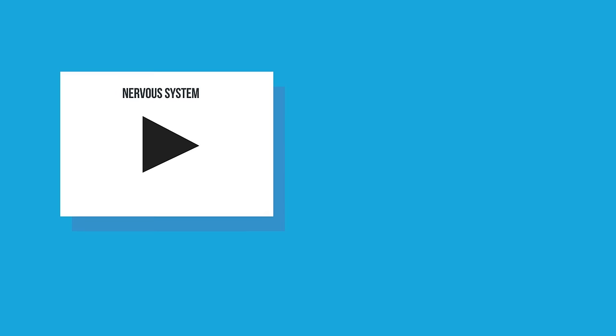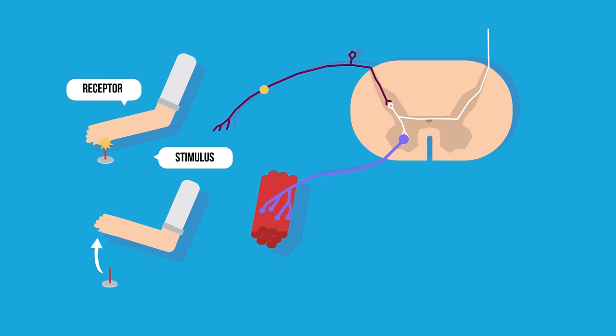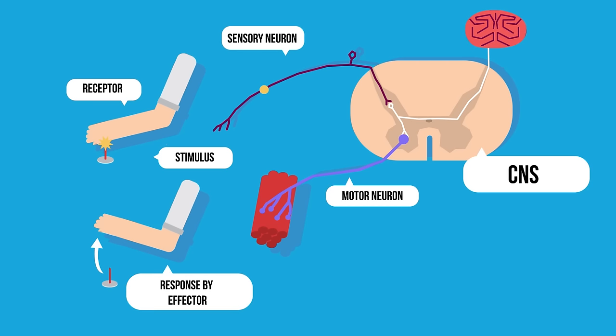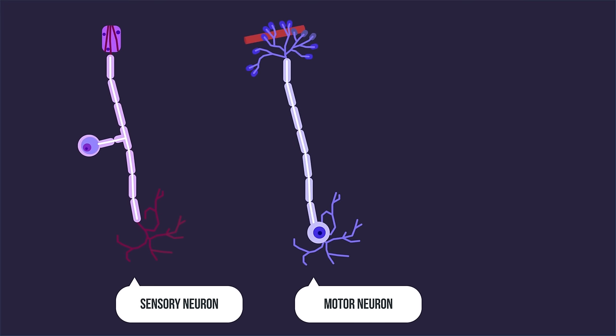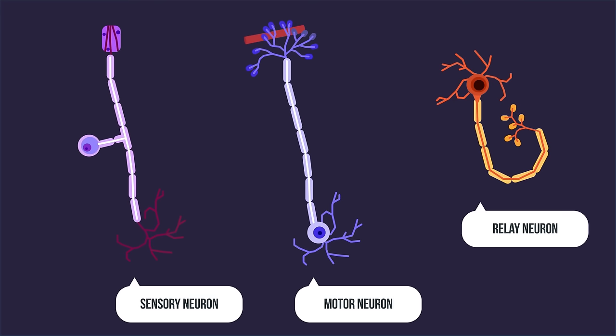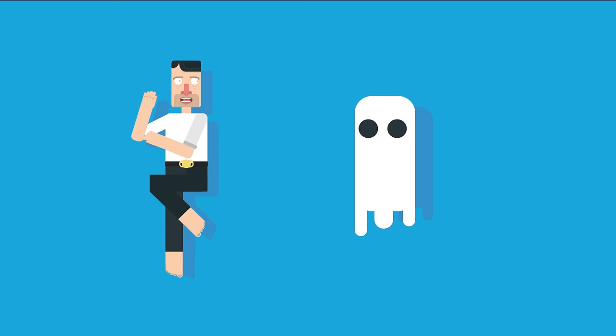From our videos on the nervous system and nerve cells, you should already know about the stimulus receptor sensory neuron, central nervous system, motor neuron effector pathway, and how sensory neurons, motor neurons, and relay neurons differ from one another. In this video, we are going to look at what happens in reflex reactions.